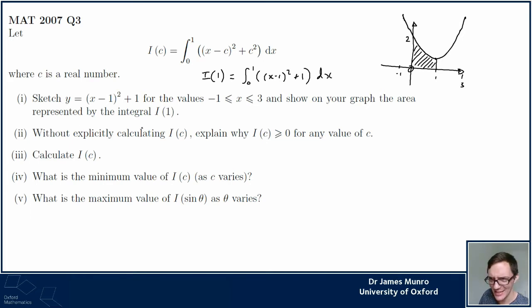Parts 2 and 3 I want to talk about. It says without explicitly calculating I(c), explain why it's positive, which might sound a bit strange. We're being asked to say why something's positive without actually working it out. I think the best approach is to start by looking at I(c) and try to work out, is there anything I can say about why this thing is positive at all?